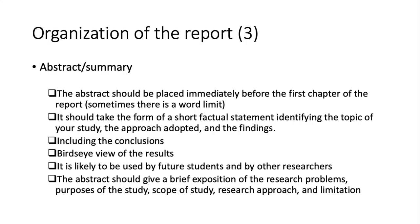Right before chapter one, you should provide an abstract or summary, placed immediately before the first chapter. Note that there is sometimes a word limit when submitting to a journal. The abstract should be a short factual statement identifying the topics of your study, the approach you adopted, and the findings — sometimes including conclusions. It is a bird's-eye view of your results and can be used by future researchers. It should briefly cover research provenance, purpose, scope, research approach, and limitations.